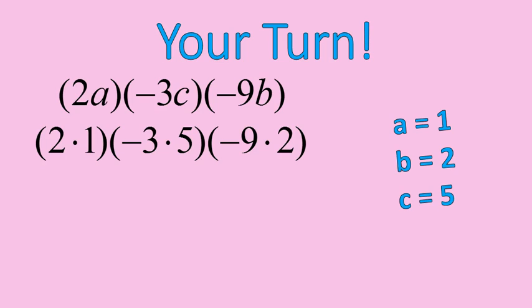Welcome back. Your first step should be this. c equals 5, b equals 2, a equals 1. These are all positive integers for your variable values. So you substitute them in. Your next step is multiplying. 2 times 1 is 2. Negative 3 times 5 is negative 15. Negative 9 times 2 is negative 18. That should be your second step.